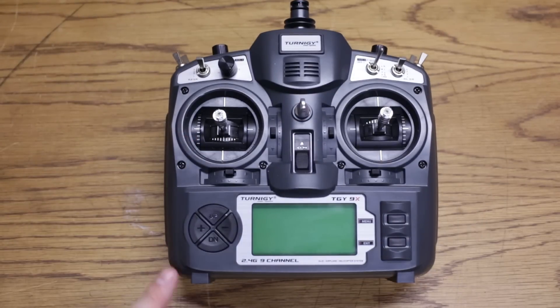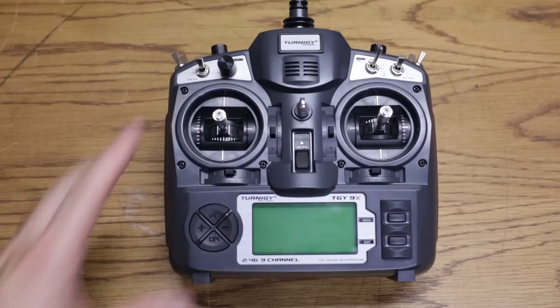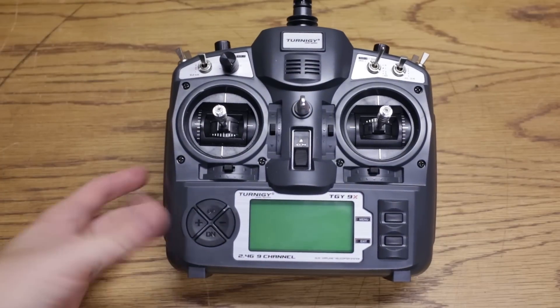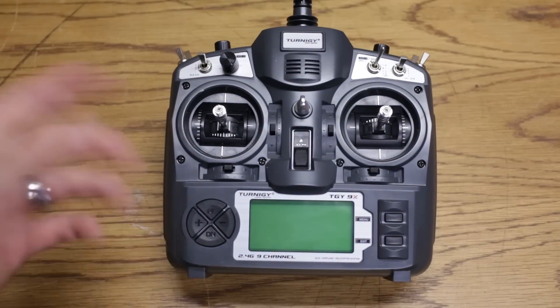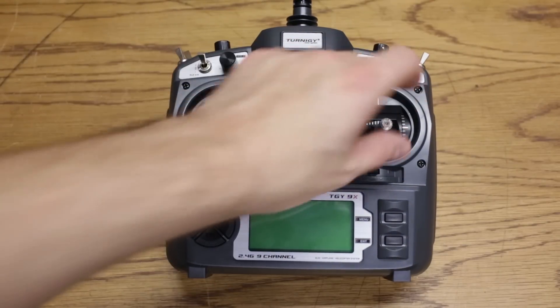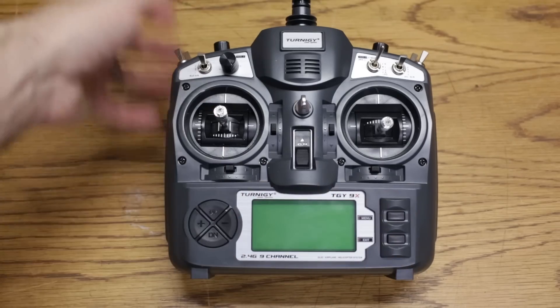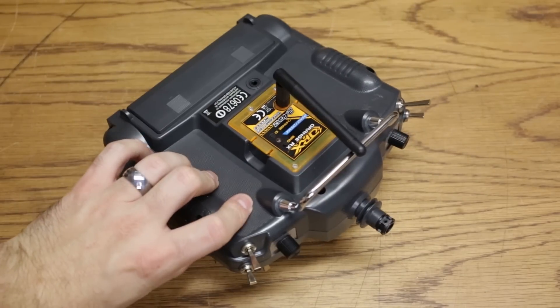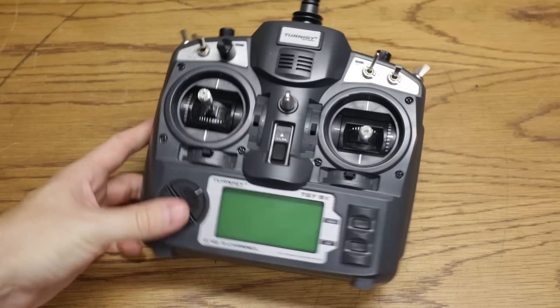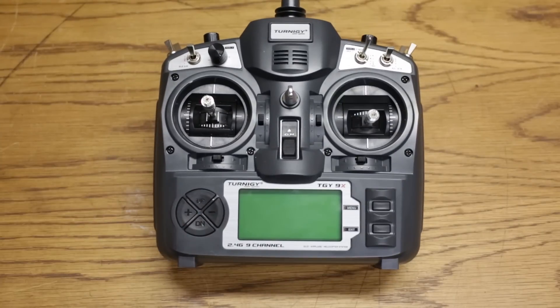This is a Turnigy 9X transmitter. The transmitter is kind of the heart of your system. It's what you actually use to control the robot. You have these nice little joysticks, you have a bunch of buttons, and you have an antenna. Mine here is on the back. And there's really not that much to it.